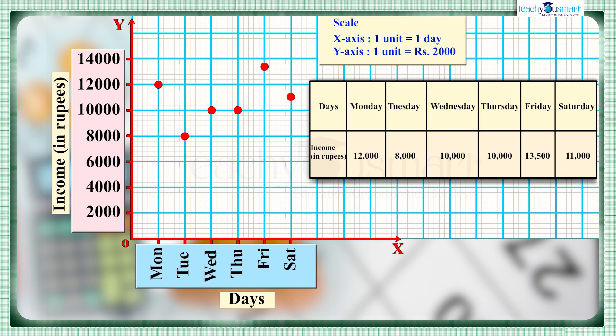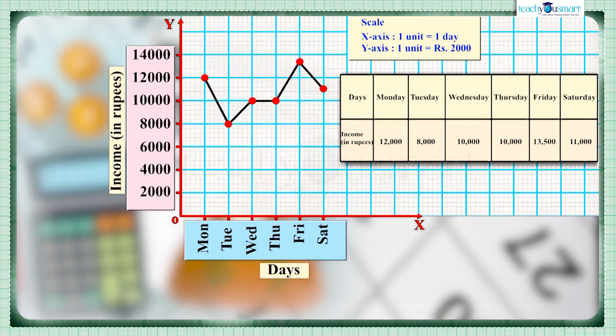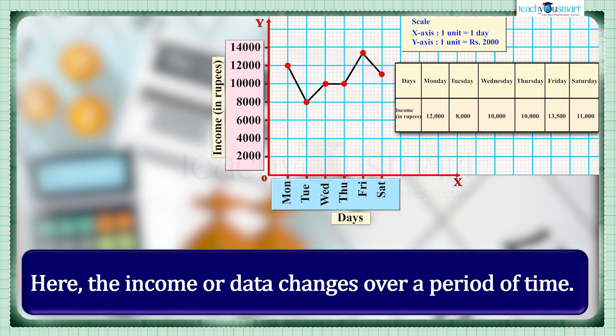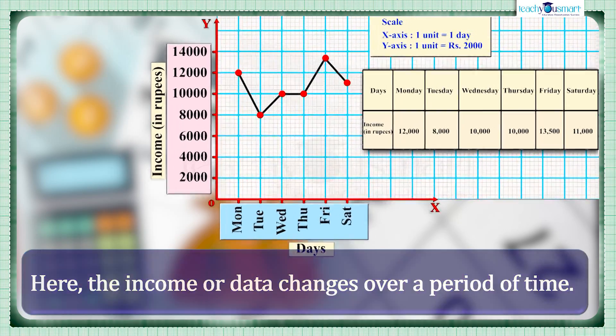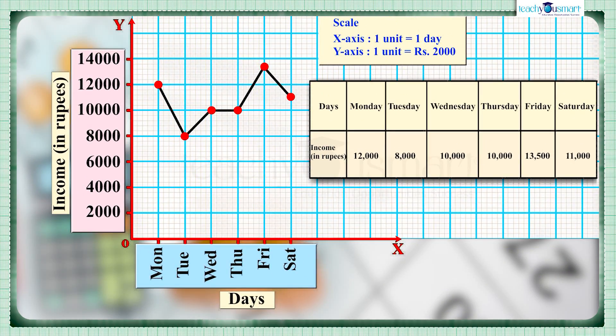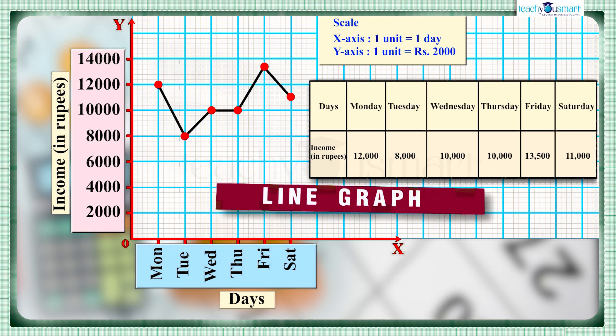Here we get some points on the plane. Let's join them using line segments. Here we can see the income or data changes over a period of time. This type of graph is called a line graph.